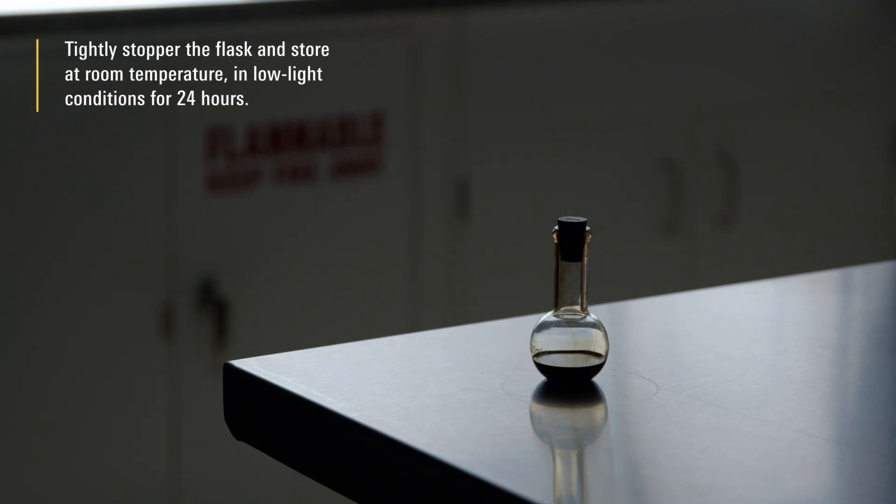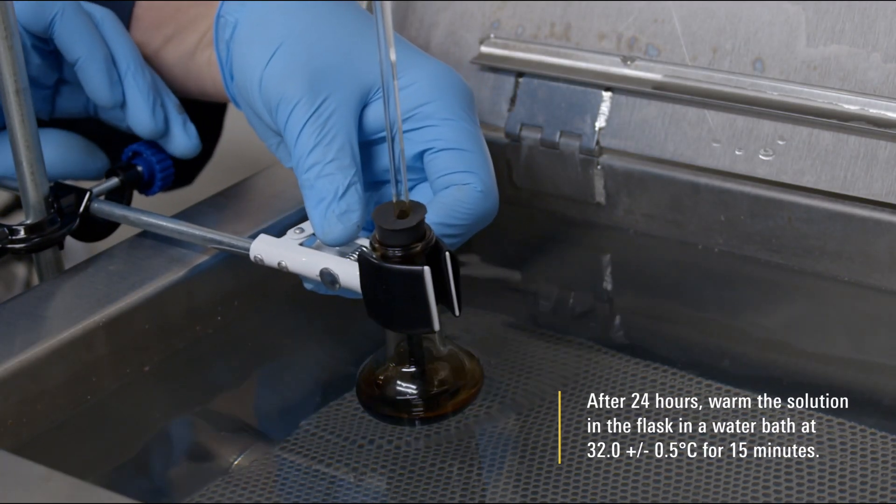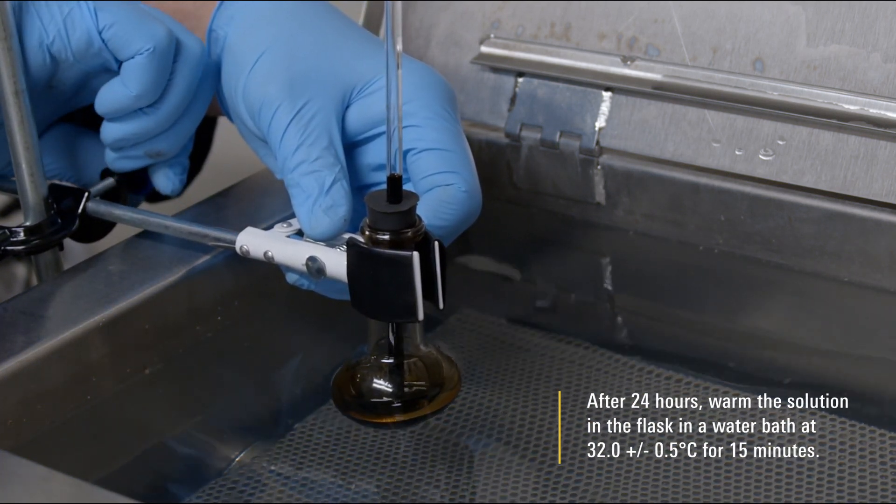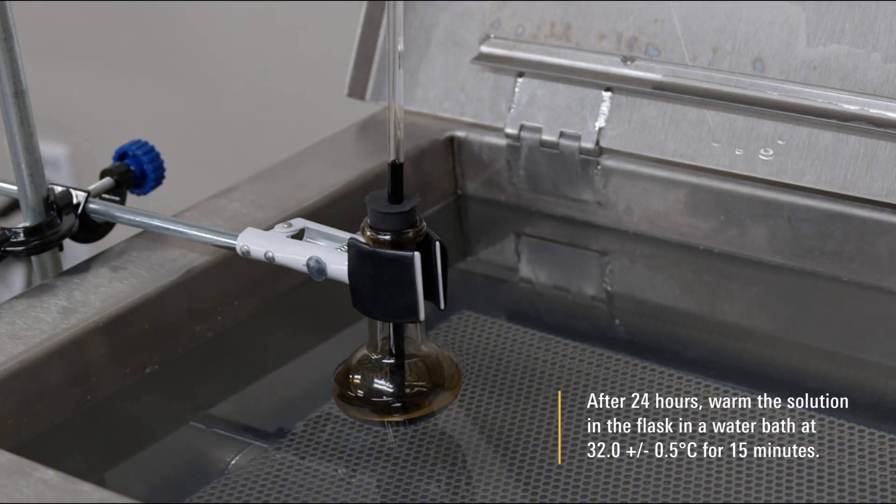Tightly stopper the flask and store at room temperature in low light conditions for 24 hours. After 24 hours, warm the solution in the flask in a water bath at 32.0 plus or minus 0.5 Celsius for 15 minutes.